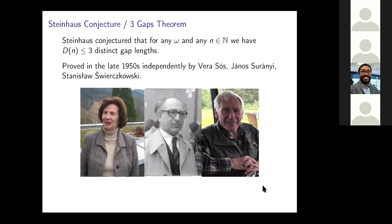There's Vera Sos on the left, Janos Sirianni in the middle, and Stanislas Swierkowski on the right. It's unfortunate I should have been able to find younger pictures of them for the Young Mathematicians Conference — especially because Sos and Swierkowski proved this in their late 20s, so they were actually young mathematicians when they proved this. Older than you, but maybe eight or nine years older. So this really is a young mathematician's theorem. I find this to be an amazingly beautiful theorem — very surprising. And you'll see the proof is very simple when you think about it just right.